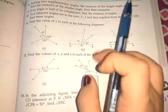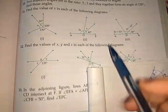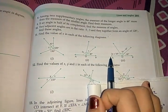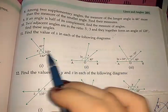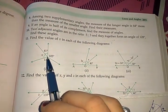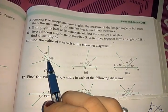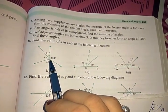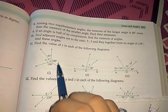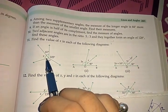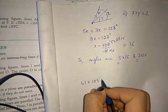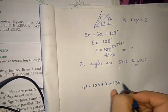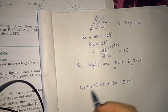For questions 11, 12, and 13, I will guide you through some parts and the rest you will do on your own. In question 11, these are angles at a point, so the sum of all angles equals 360 degrees. That means 41 plus 105 plus x plus 130 equals 360 degrees.